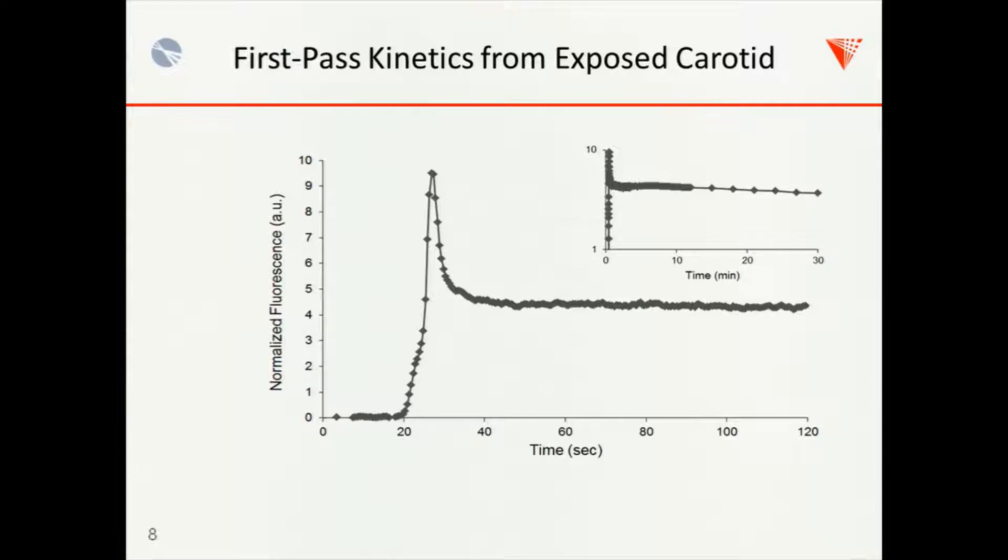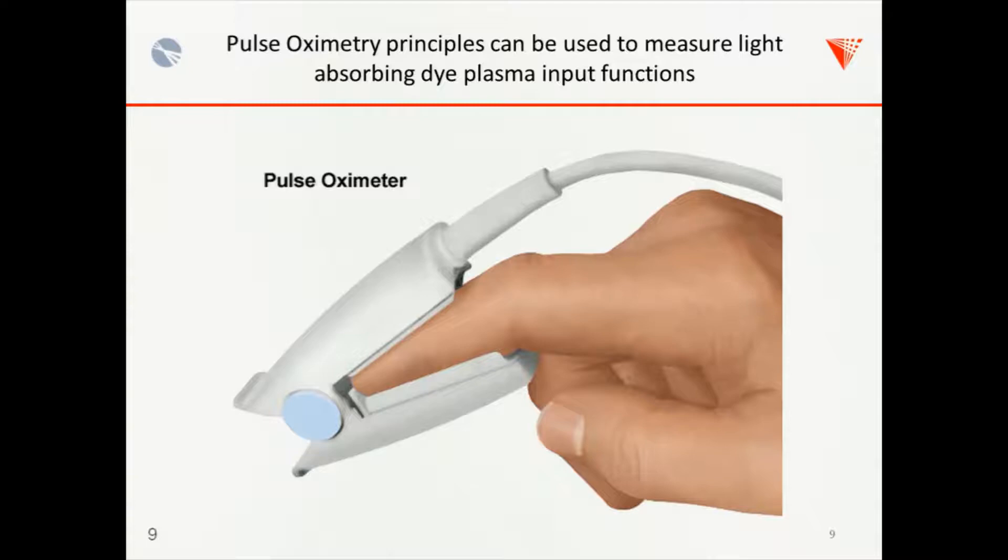But you can get then uptake curves over at least the binding kinetic time range that I was talking about for two different tracers. And you see these two traces that we're looking at have very different plasma input functions. And this is actually brand new data. And we're still working on validating this with blood sampling. So I don't have that information yet. You can also do this on a much faster time scale and get sort of that first pass kinetics. And that's what we're showing here. So that's sort of exposing the carotid and measuring the input function directly from the carotid artery.